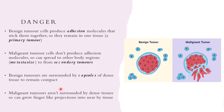Malignant tumors are not surrounded by dense tissue. Without this capsule, malignant tumors can grow finger-like projections into nearby tissue, which helps them metastasize and spread to other body regions. They lack both the adhesion molecules that stick cells together and the dense tissue capsule that keeps the tumor compact, so they can metastasize and move into other tissues.